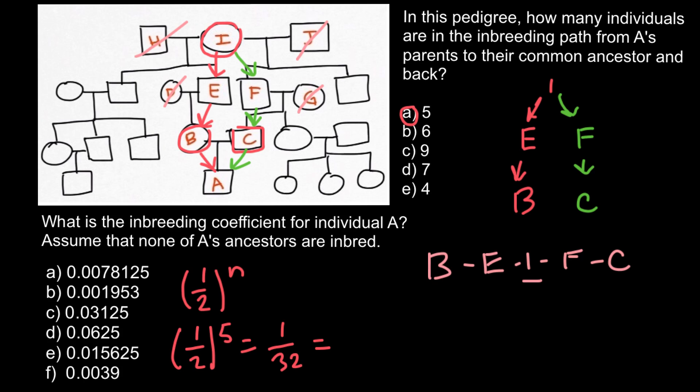That is going to be one over thirty-two, and the decimal number would be 0.03125. We also can give an answer in percentage form. We just have to multiply by 100 because this answer here is on the scale between zero and one.